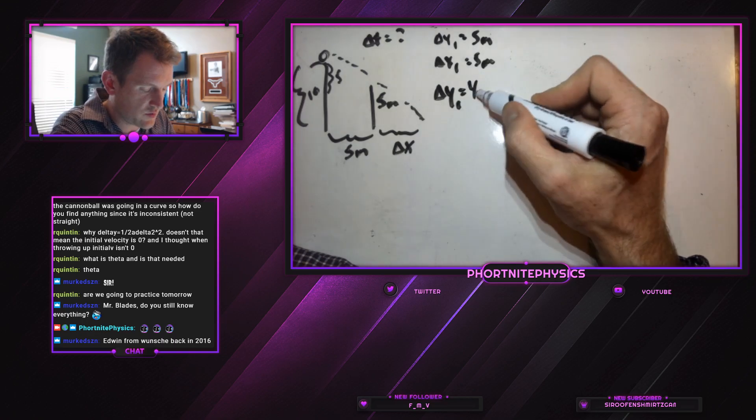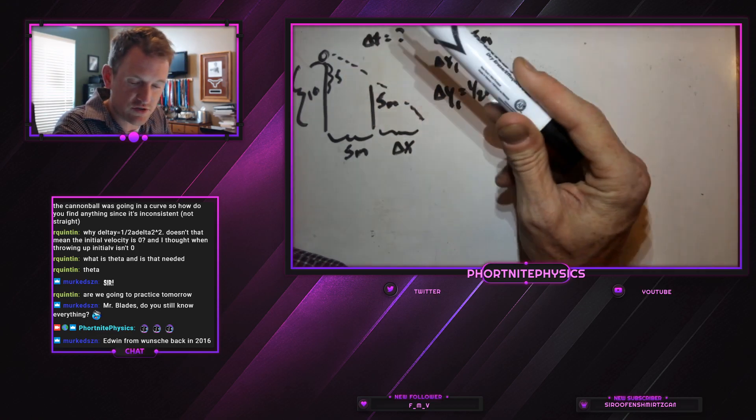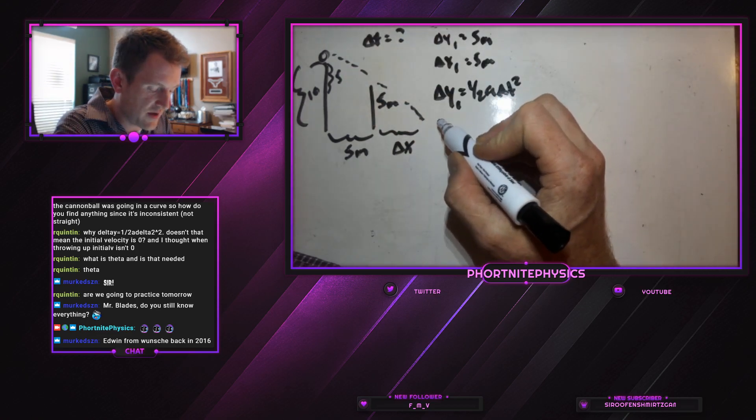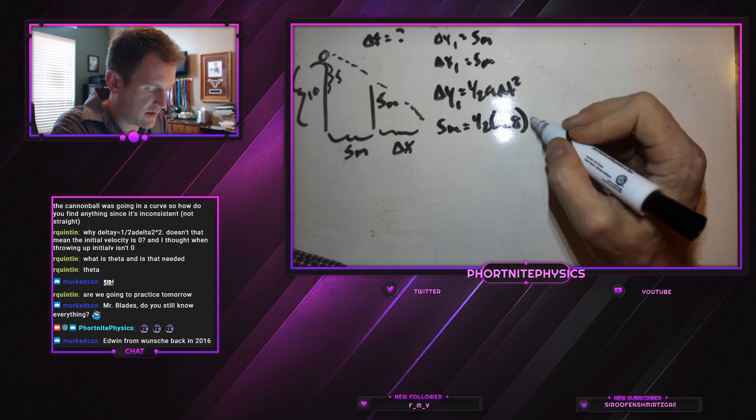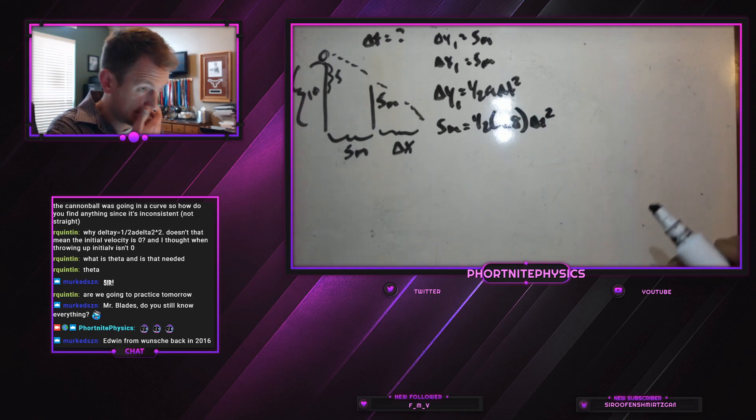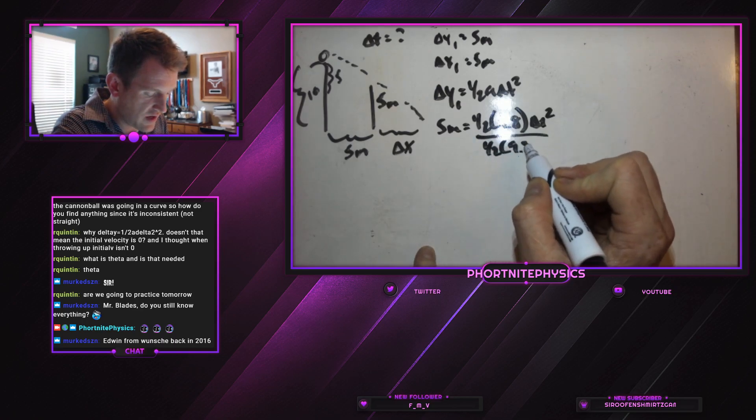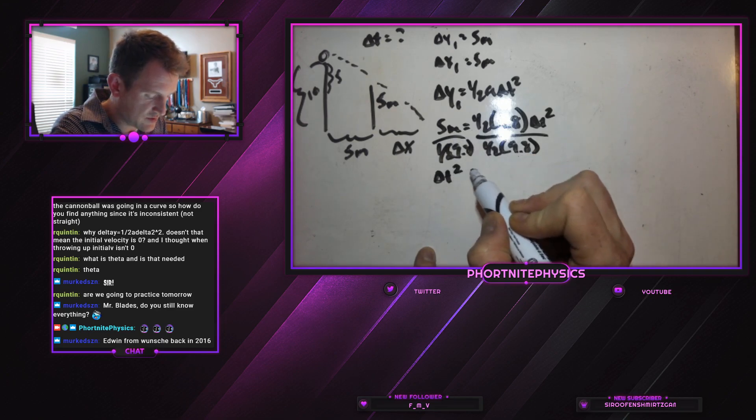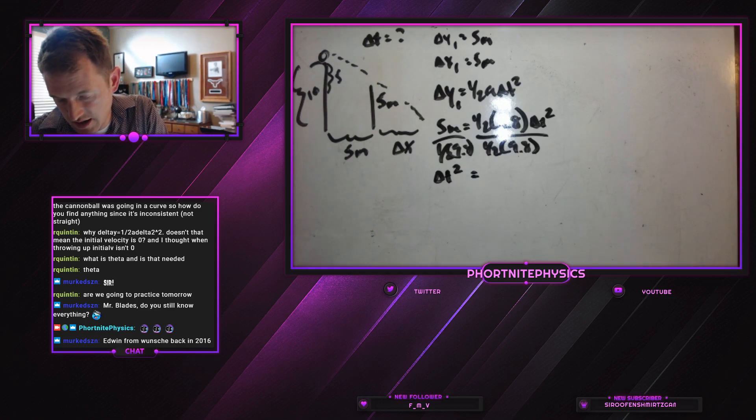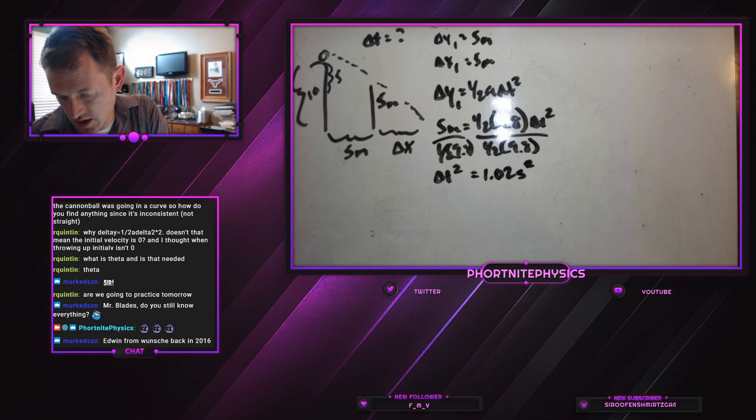So delta Y1 is equal to 1 half A delta T squared. Our initial fall is this original fall of 5 meters. So we have 5 meters down equals 1 half 9.8 multiplied by however long that takes. So let's divide both sides by 1 half of 9.8, and we have our time squared is equal to 5 divided by 4.9, or 1.02 second squared.